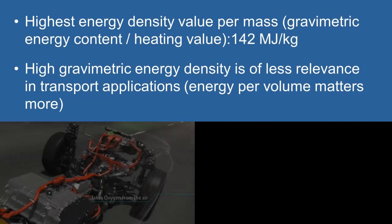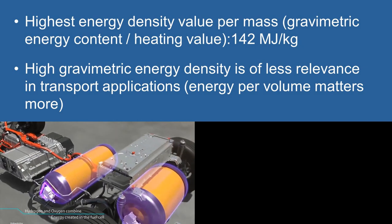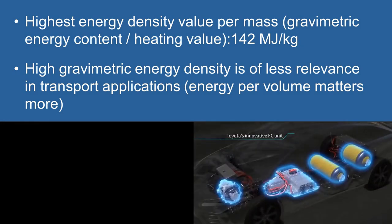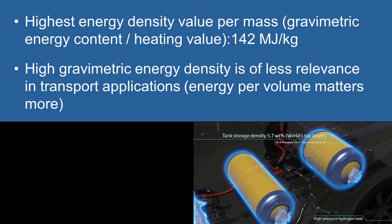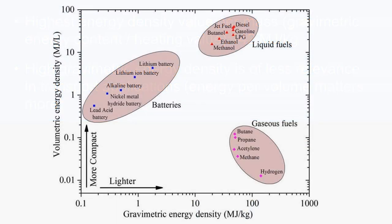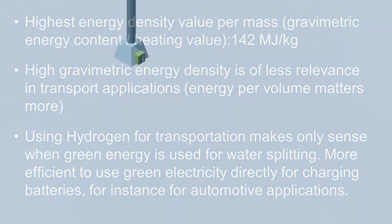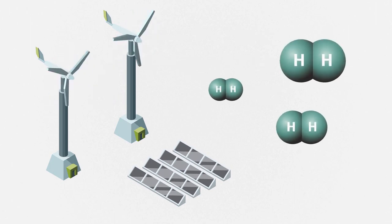Hydrogen has a very high energy density per mass of 142 megajoules per kilogram. Yet this is of little relevance in applications where volume matters — for instance, the volume available for fuel tanks is limited and the diameter of pipelines cannot be increased at will. For most practical assessments, it is more meaningful to refer the energy content to a reference volume. Another issue is the synthesis of hydrogen: its use in transportation makes only sense when green energy is used for water splitting, however it can then be more efficient to use green electricity directly for charging batteries.